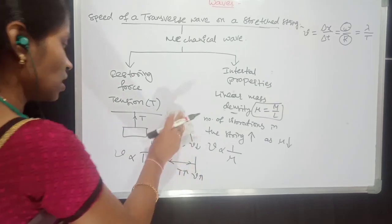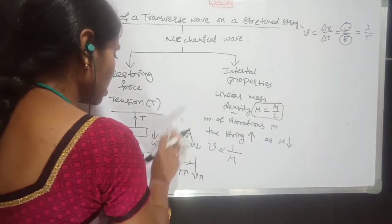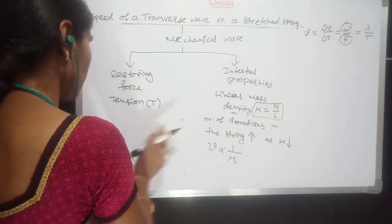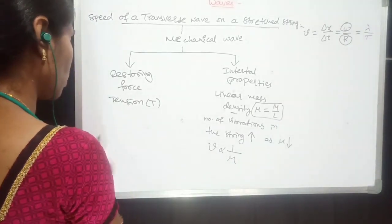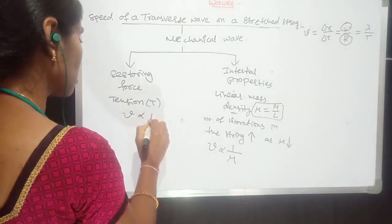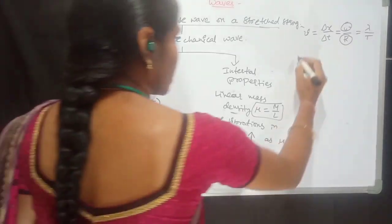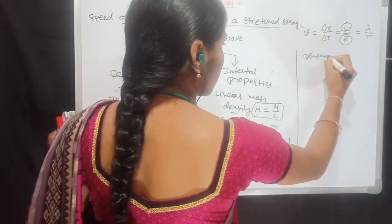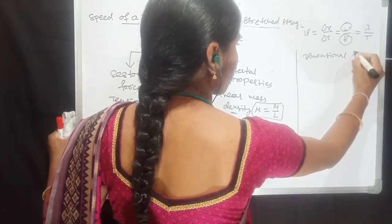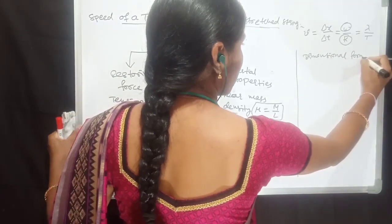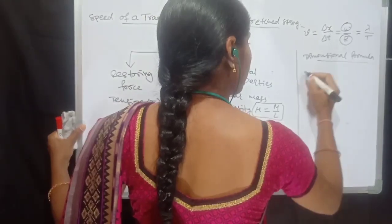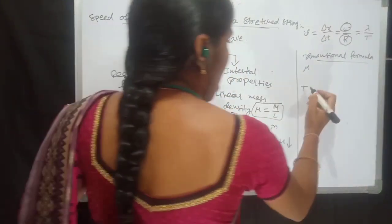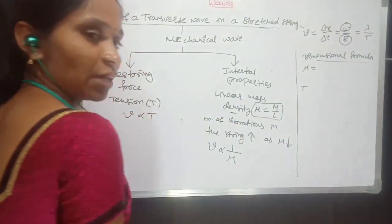So from these two examples, you can say that the speed of the wave is directly proportional to the tension and inversely proportional to the linear mass density. To find the exact formula for this speed, I am going to use dimensional analysis — dimensional formulas for linear mass density and tension.